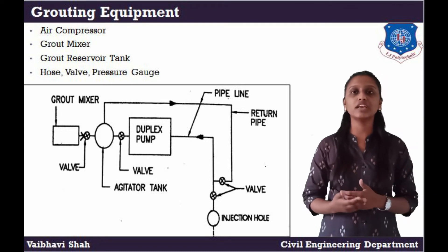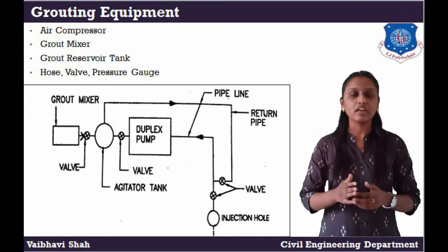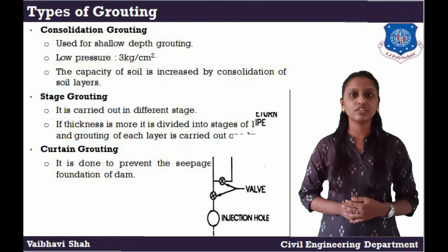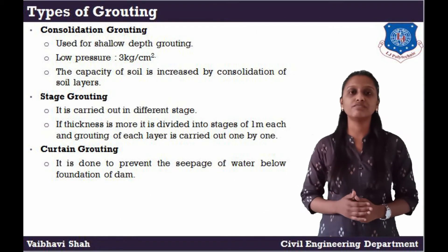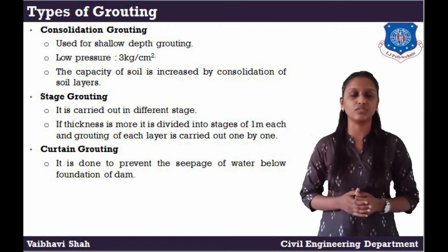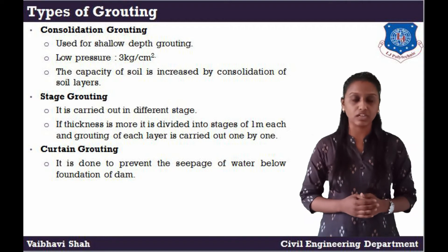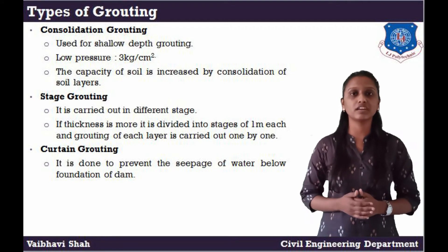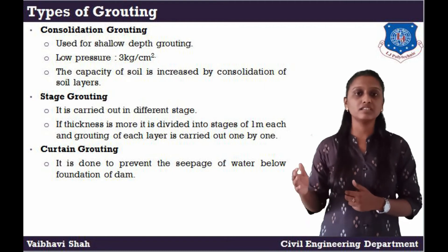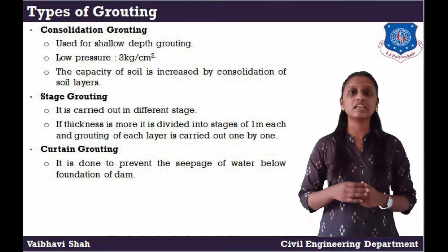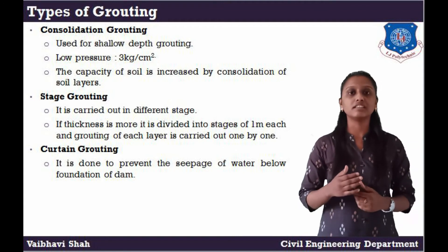These are the components and equipment used in the grouting process. Grouting is mainly divided into three parts. First is consolidation grouting, which is used for shallow depth grouting. In consolidation grouting, pressure is 3 kg per cm². The bearing capacity of soil is increased by consolidation of soil layers.